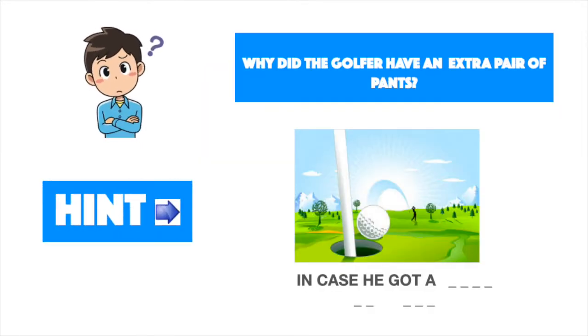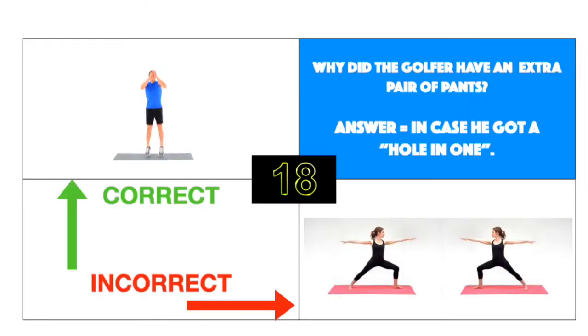Why did the golfer have an extra pair of pants? Answer, in case he got a hole-in-one. Correct, do jump squats. Incorrect, do warrior pose on both sides.